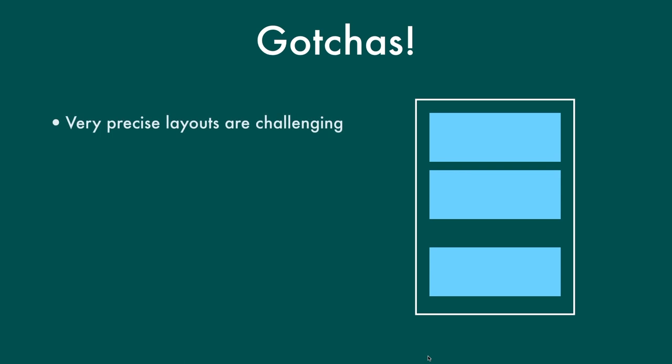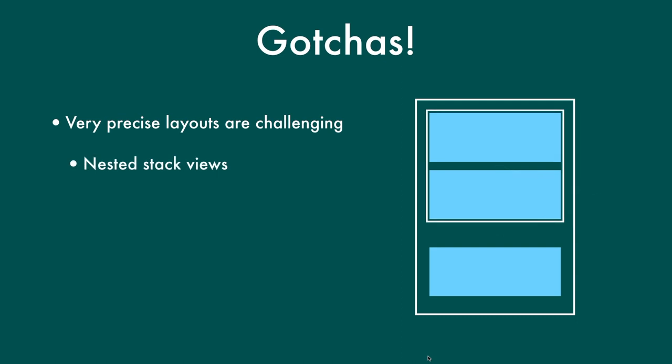Very precise layouts are challenging in UI Stack Views. Some cases are even more difficult because UI Stack View isn't designed to let you decide exactly where everything is — you're setting some properties and giving hints, but it's really in charge of the layout. For example, if I really want the first two items in a stack to be spaced closer together than the second and third items, in current versions of iOS there's no direct way to make that happen. You have to do tricks like nesting stack views so the internal stack view has one spacing value and the external has another. However, in iOS 11 they did add the setCustomSpacing function, so you can now set custom spacing between different views in the stack.